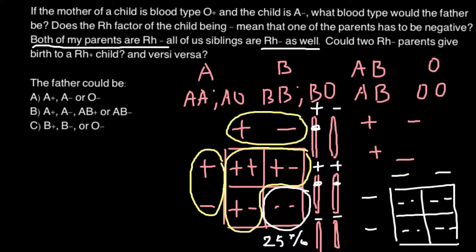Now we can return to our initial problem and solve the answer variants presented here. Once again, here are the genotypes that make each phenotype. Let's look at answer A. If the mother of the child is O positive, she belongs to the OO genotype. She may be heterozygous or homozygous positive for the Rh factor.